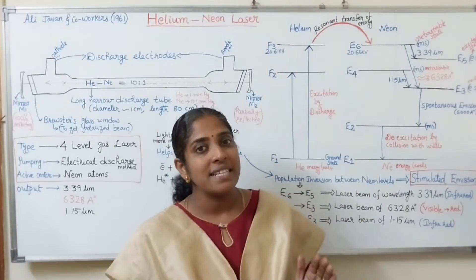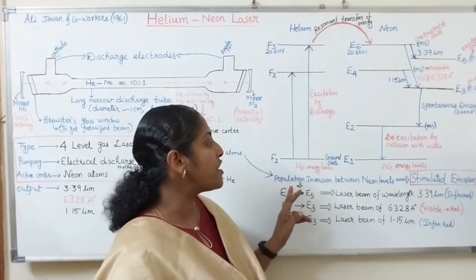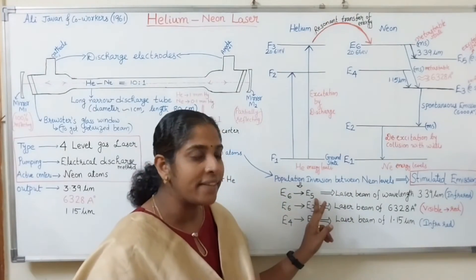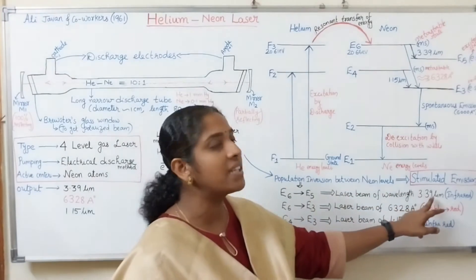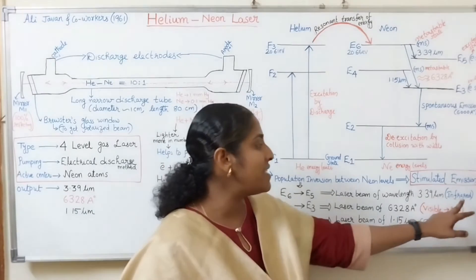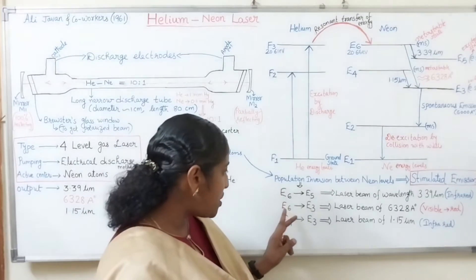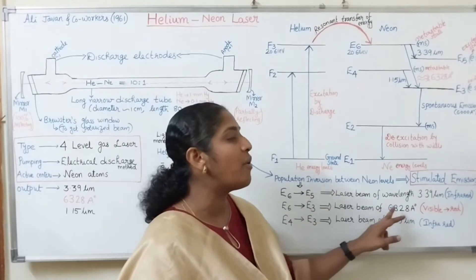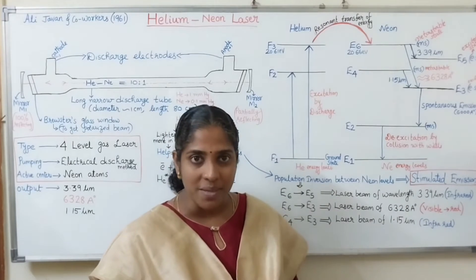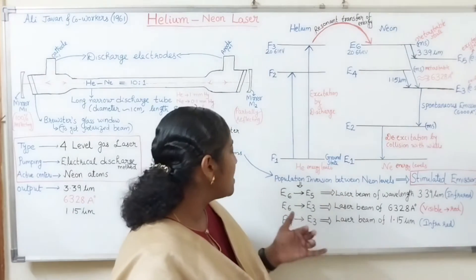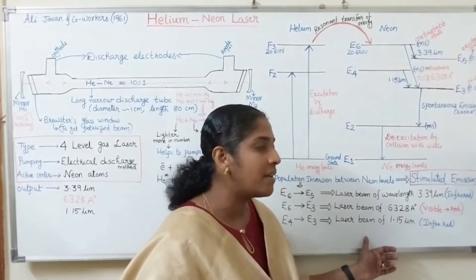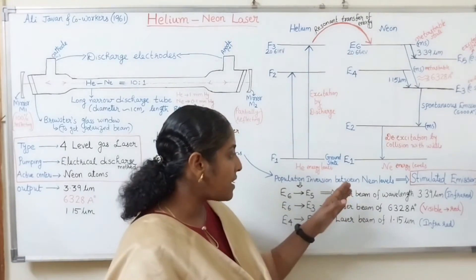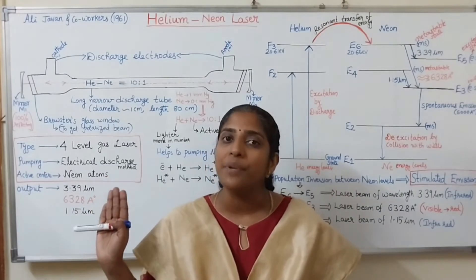The population inversion between neon energy levels E6 and E5 results in stimulated emission producing a laser beam of wavelength 3.39 micrometers, which is in the infrared region. The population inversion between E6 and E3 results in stimulated emission giving a laser beam of 6,328 Angstroms, in the visible region — that is the red laser beam. The E4 to E3 transition gives a laser beam of wavelength 1.15 micrometers, in the infrared region.